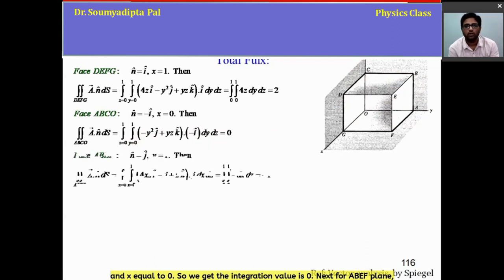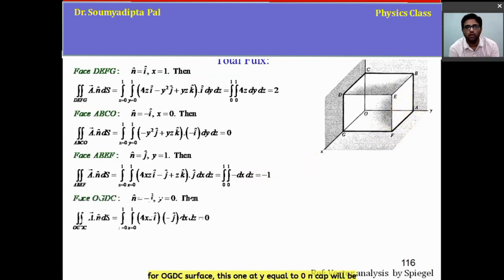Next, for ABEF plane, this one, here n cap is j cap and y equal to 1. So we get this value minus 1. Then for OGDC surface, this one, at y equal to 0, n cap will be minus j cap. Then the integration value will be 0.